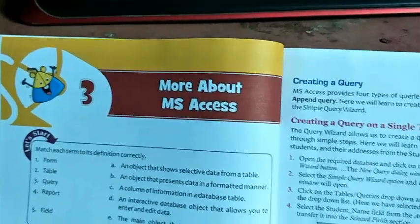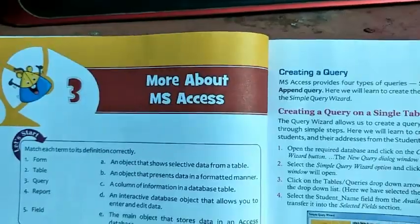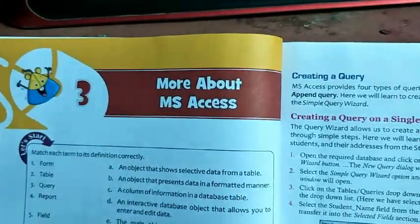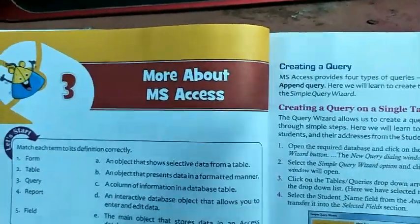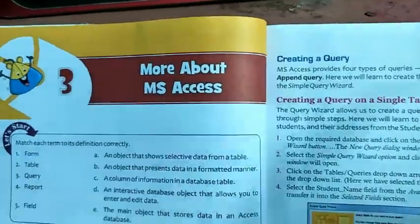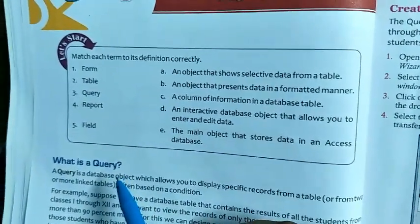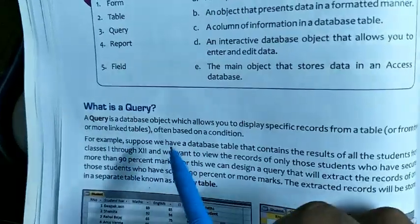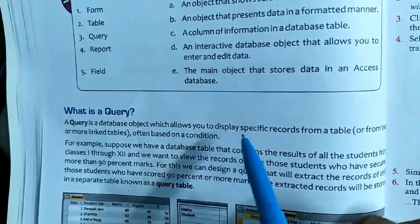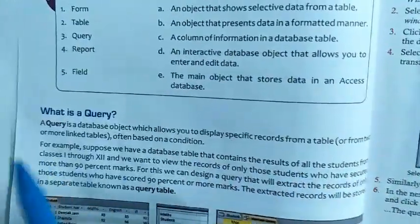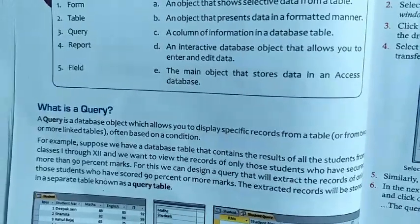Hello students, today I will start a new chapter, Chapter 3, which is more about MS Access. In this chapter we will understand more options used in MS Access. Today I will start with how to create a query. A query is a database object which allows you to display specific records from a table or from two or more linked tables, often based on a condition.